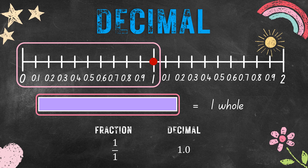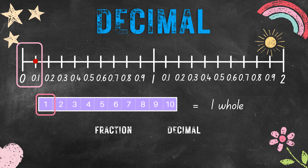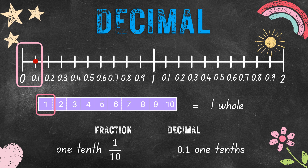Let us divide this 1 whole into 10 equal parts. Now let us focus on just 1 part of that 1 whole — just a part of a whole. How are we going to write that in fraction and in decimal? In fraction, that is 1 over 10, and in decimal, that is 0.1. For both fraction and decimal, we read it as 1 tenth.